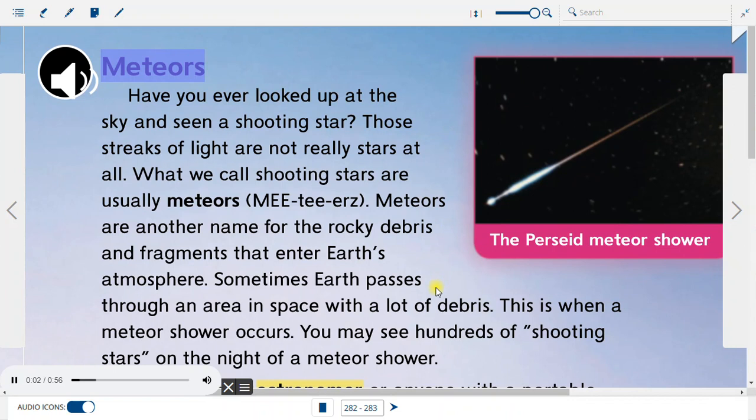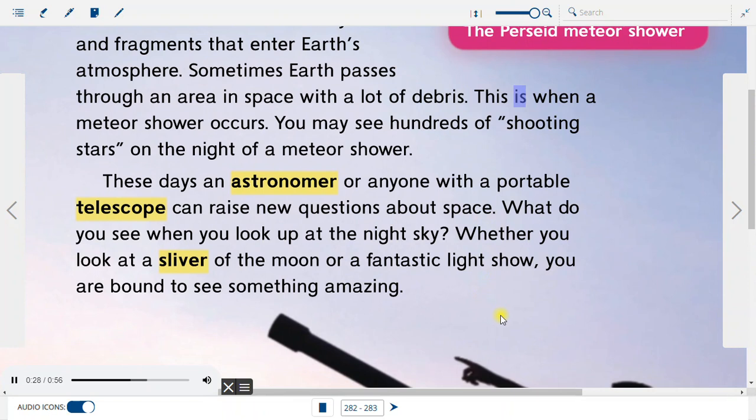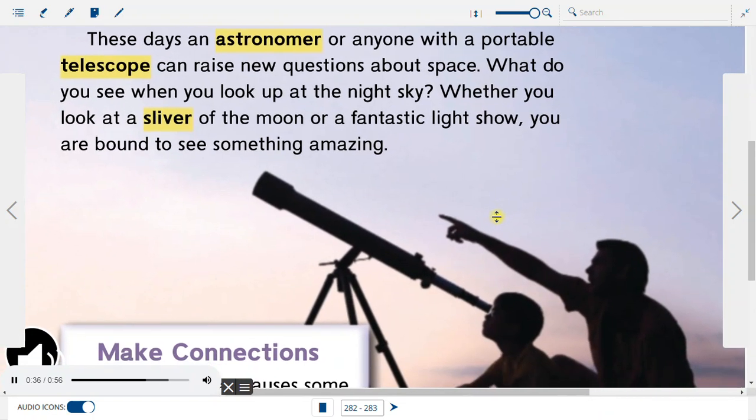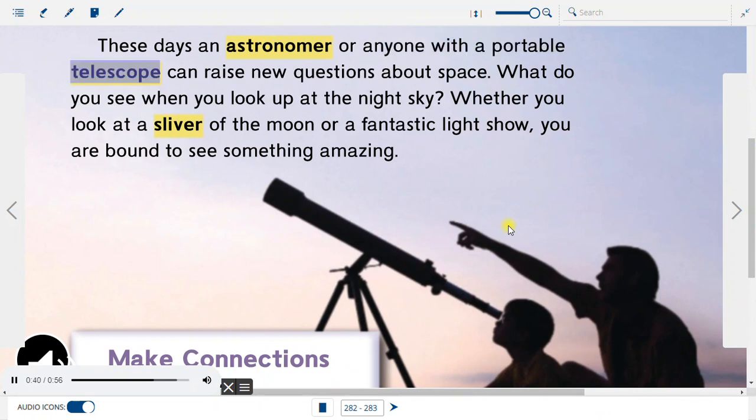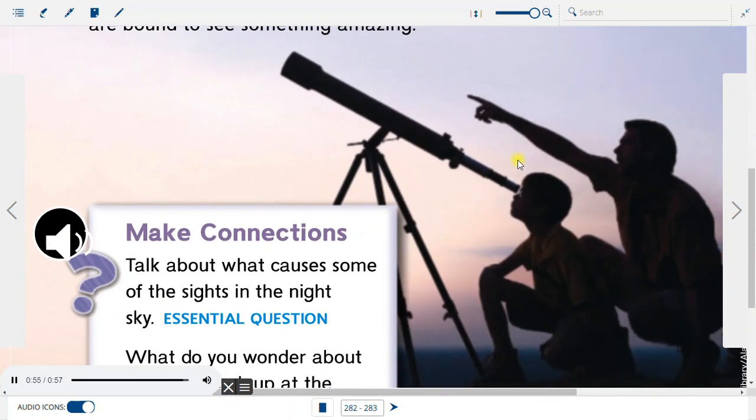Meteors. Have you ever looked up at the sky and seen a shooting star? Those streaks of light are not really stars at all. What we call shooting stars are usually meteors. Meteors are another name for the rocky debris and fragments that enter Earth's atmosphere. Sometimes Earth passes through an area in space with a lot of debris. This is when a meteor shower occurs. You may see hundreds of shooting stars on the night of a meteor shower. These days, an astronomer or anyone with a portable telescope can raise new questions about space. What do you see when you look up at the night sky? Whether you look at a sliver of the moon or a fantastic light show, you are bound to see something amazing. The Perseid meteor shower.